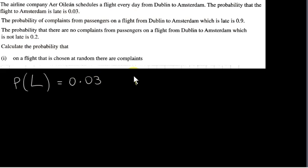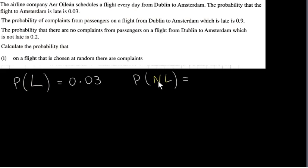From this we can work out the probability that a flight is not late. I will call the event of a flight not being late NL. Since a flight is either late or not late and it can't be anything else, the probabilities of the events L and NL must sum to 1. So the probability of NL must be 0.97.